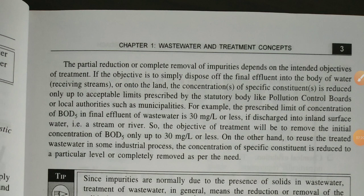For complete removal of impurities, it depends on the intended treatment objective. If the objective is to simply dispose of the final effluent into a body of water, receiving streams, or onto land, the concentration of specific constituents is reduced only up to acceptable limits prescribed by the statutory body, such as pollution control boards or local authorities like municipalities.